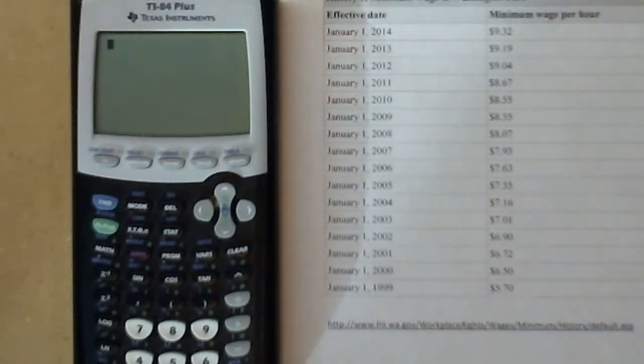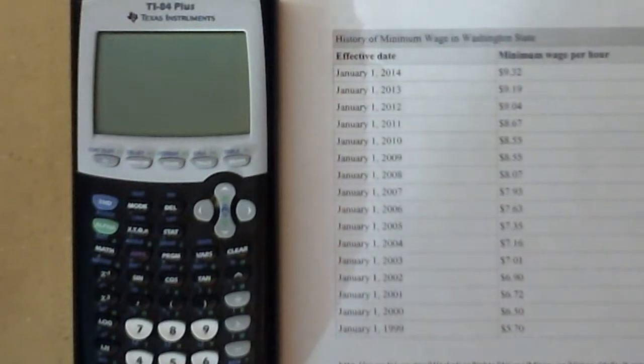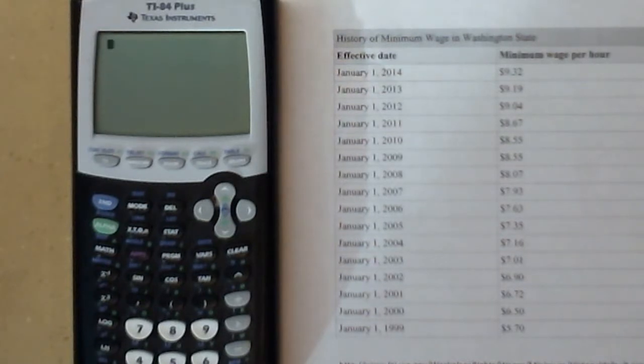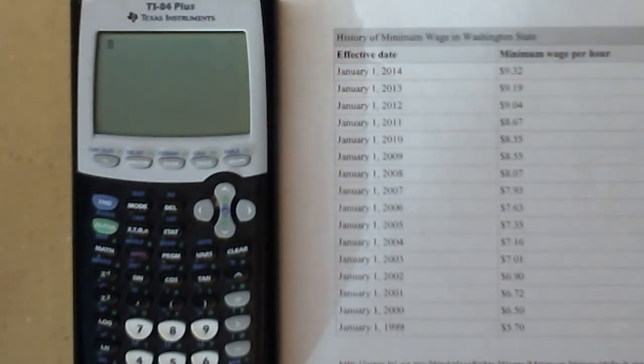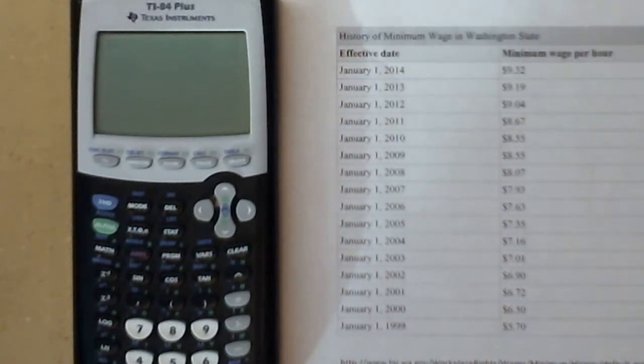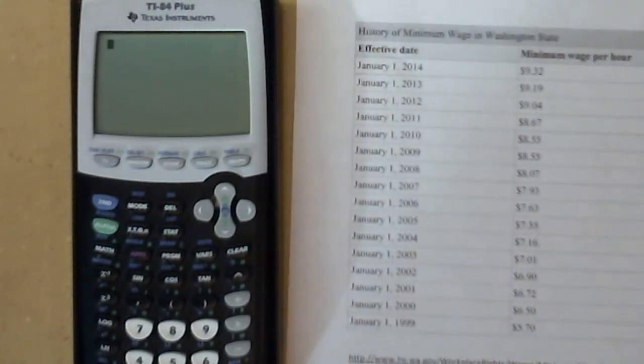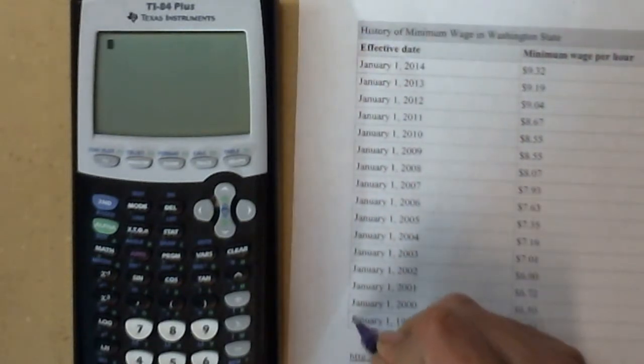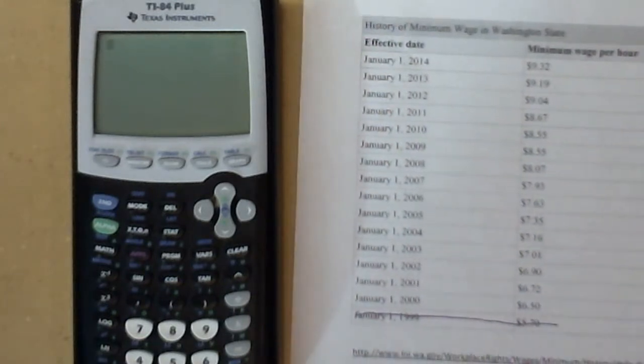I'm going to show you how to do a scatter plot on a TI-84 Plus. I grabbed some data off the internet, and this is the minimum wage historically in Washington State. It goes back to 1999 through 2014. I'm going to cross off that bottom one so that I can actually have my data go for years since 2000.